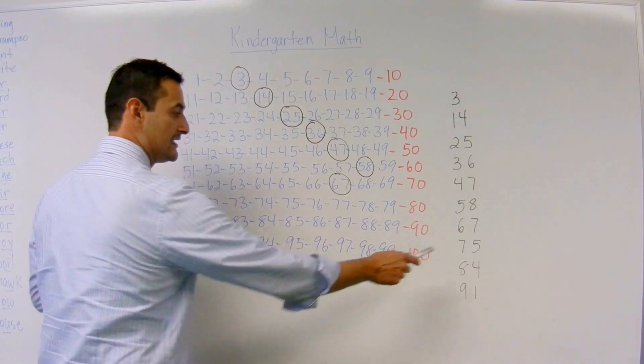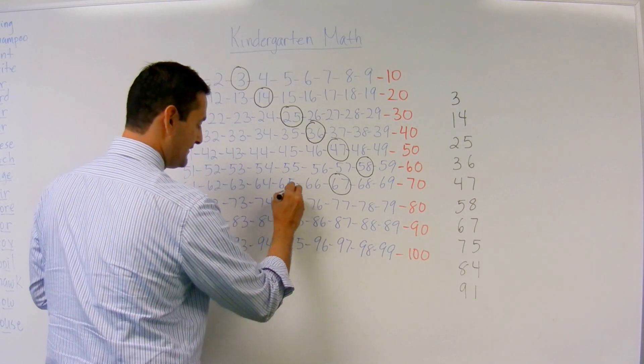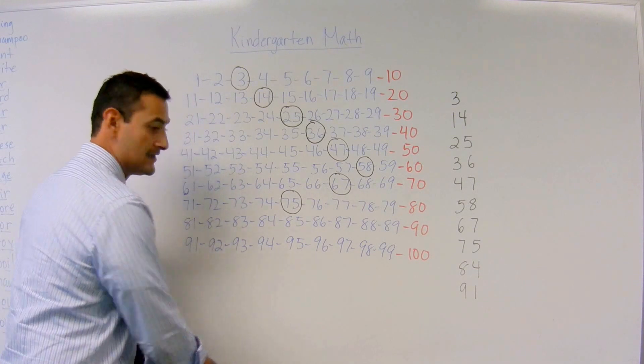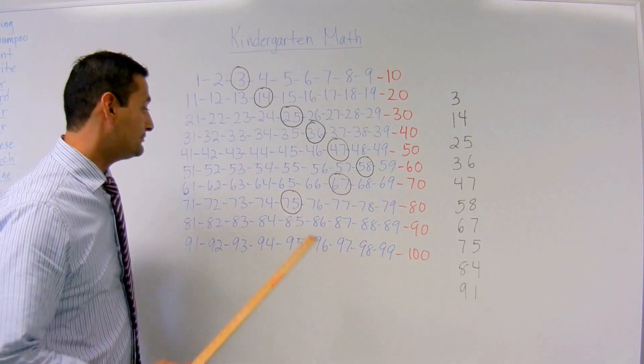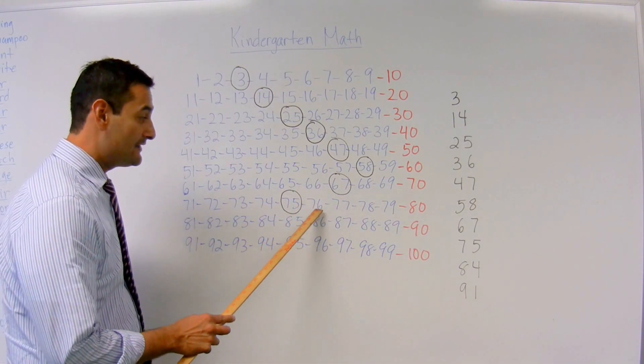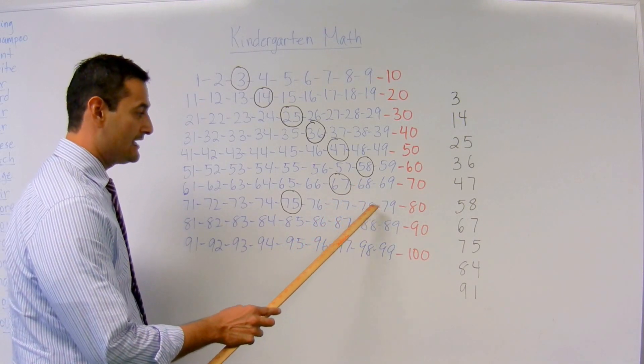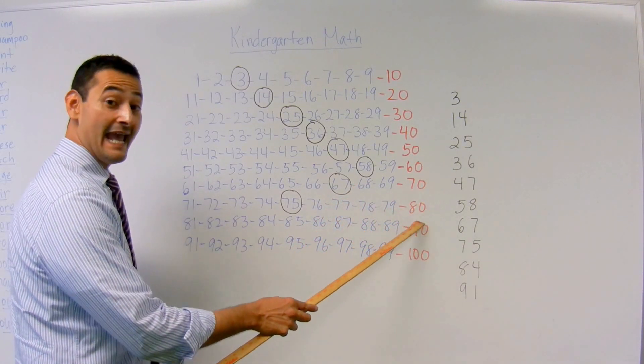Now let's look at number 75. Here's 75, boys and girls. So let's go ahead and count up a few. 75, 76, 77, 78, 79, 80.